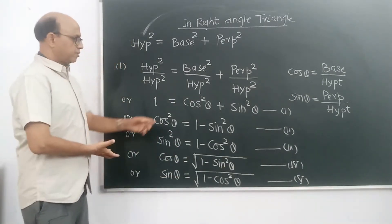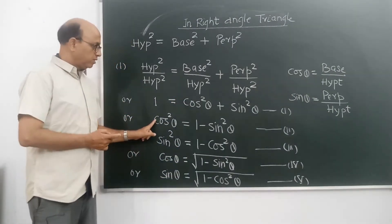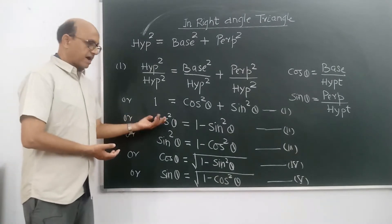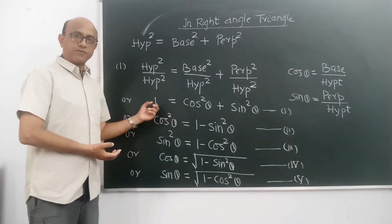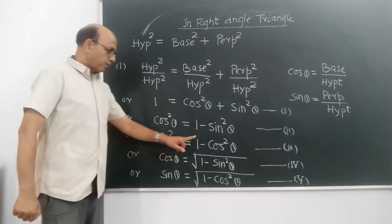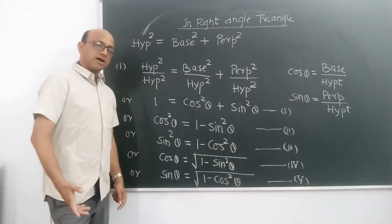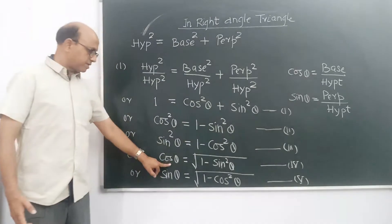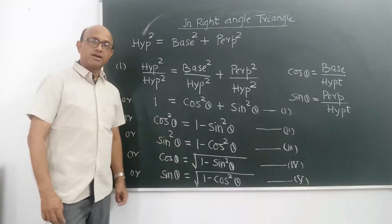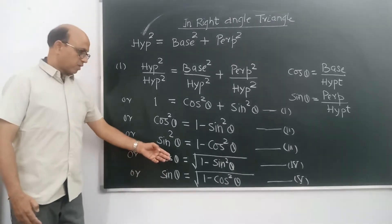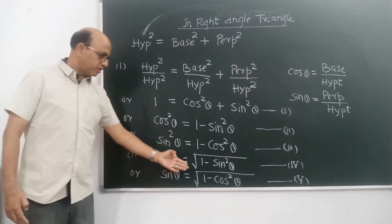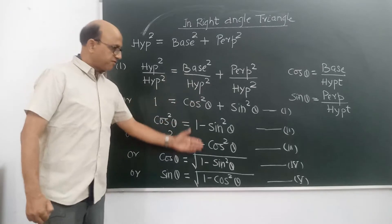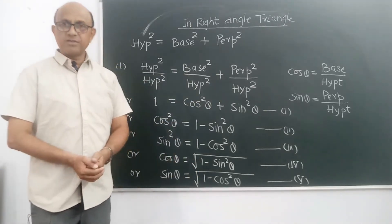Baaki 4 equations aap isi se derive karenge. Cos square theta is equal to 1 minus sin square theta. Agar aap sin square theta ki value nikaalana chahte hain to cos square theta ko shift karke sin square theta is equal to 1 minus cos square theta. Agar sirf cos theta chahiye to square root lagaiye: cos theta is equal to square root of (1 minus sin square theta). Similarly, sin theta is equal to square root of (1 minus cos square theta).